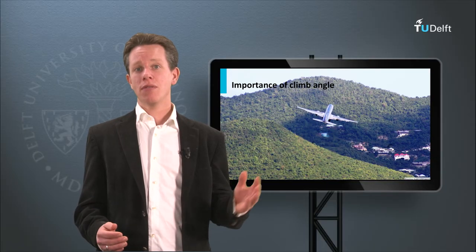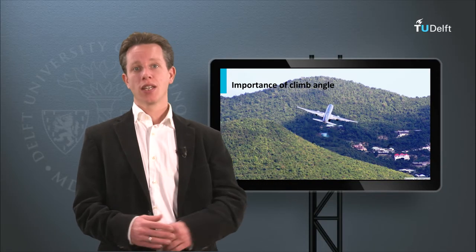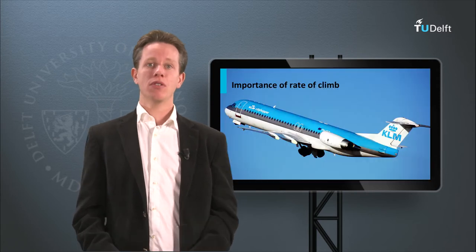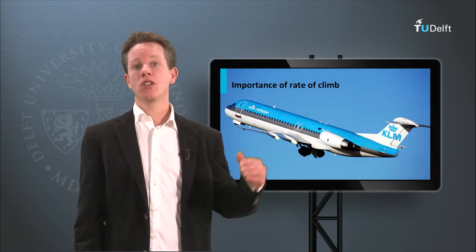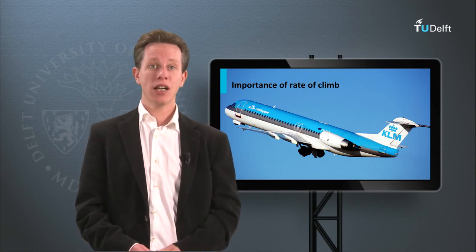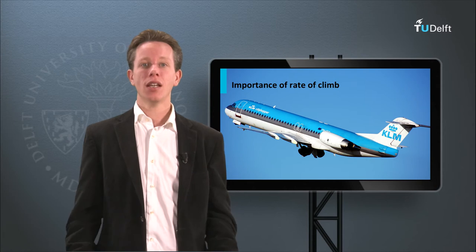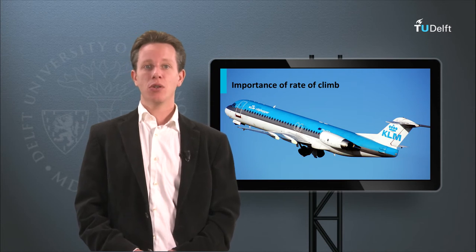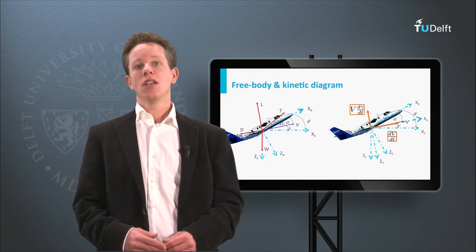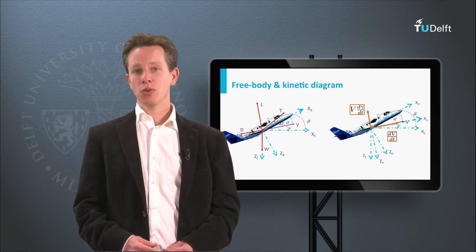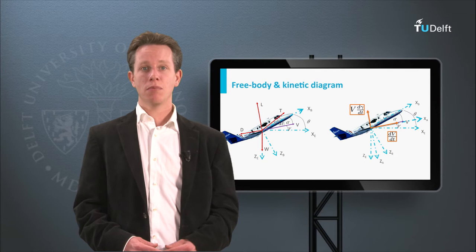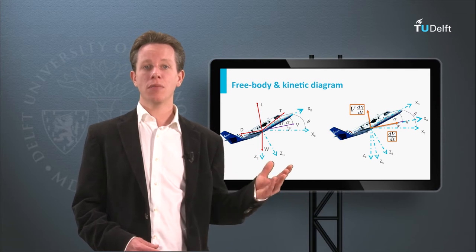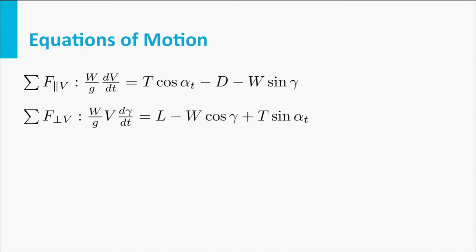The climb angle can be very important if the aircraft has to clear a certain object. The rate of climb is important when, for example, a commercial aircraft wants to go to cruise altitude quickly, because it can fly quite efficiently at that altitude. Now, in order to start calculating the maximum climb or descent performance, we need to have the equations of motion for this situation. Remember that we already derived the general equations of motion for two-dimensional flight based on a free body diagram and a kinetic diagram — let's take those as a starting point.